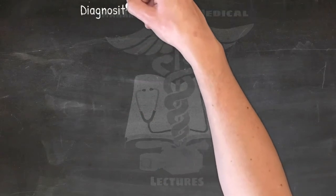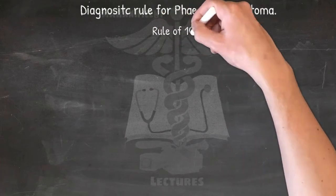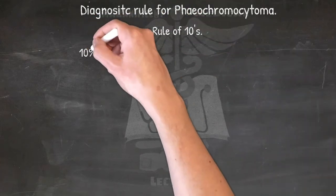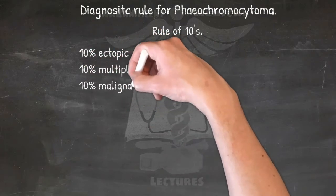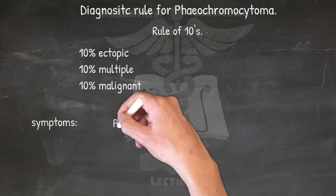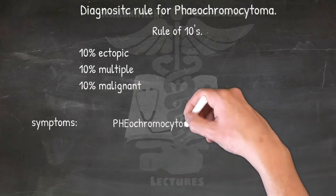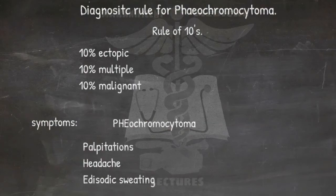Diagnosis rule — pheochromocytoma: this is a rare and usually benign tumor that develops in an adrenal gland. Rule of tens: 10% ectopic, 10% multiple, and 10% malignant. Its three most common symptoms are palpitations, headache, and episodic sweating (diaphoresis).